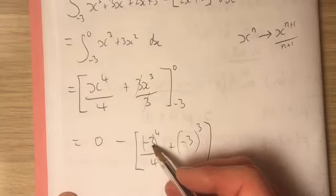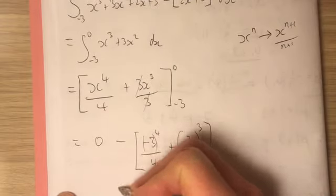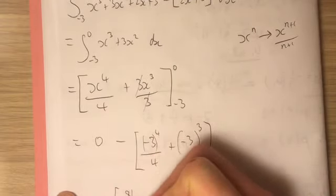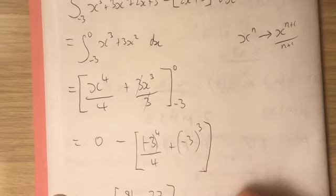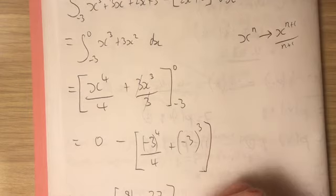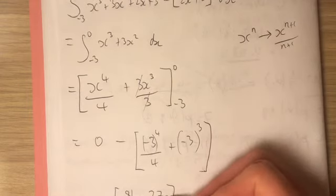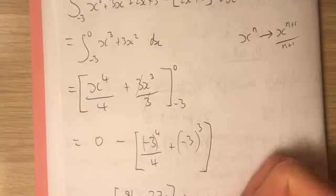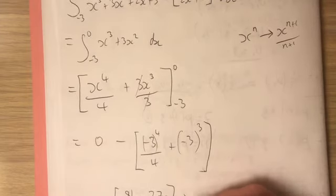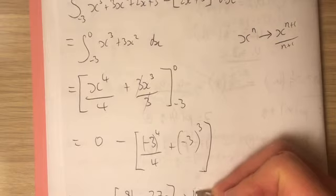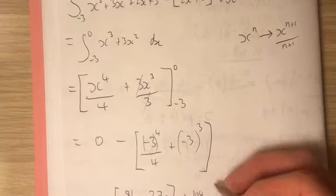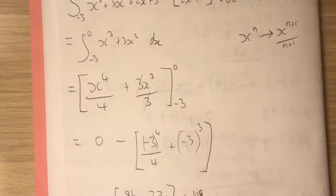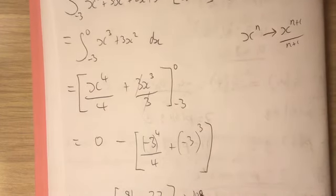27 times 3. Is it like 71? 81? 81. So equals negative 81 over 4, take away 27. And we can try and do something a bit nicer about that. 27, let's make that be a fraction out of 4. So what's 27 times by 4 would be 80 plus 28. So 104 over 4. 108 over 4. So 81 take away 108 would be 27.